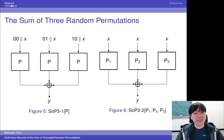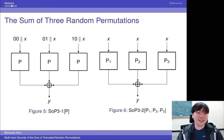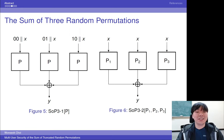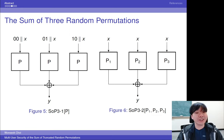We also studied the sum of three random permutations. SOP-3-1 is a single permutation version, and was studied by Bhattacharya and Nandi at AsiaCrypt last year. However, they did not study SOP-3-2, and we showed that SOP-3-2 can be more secure than SOP-3-1.